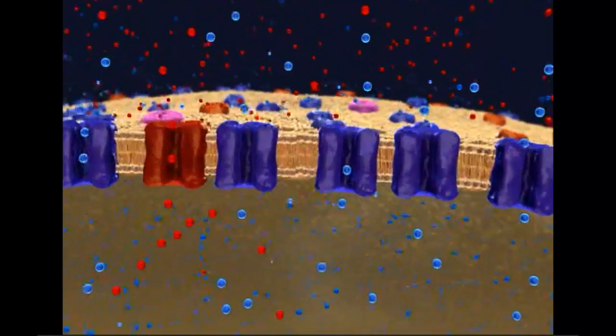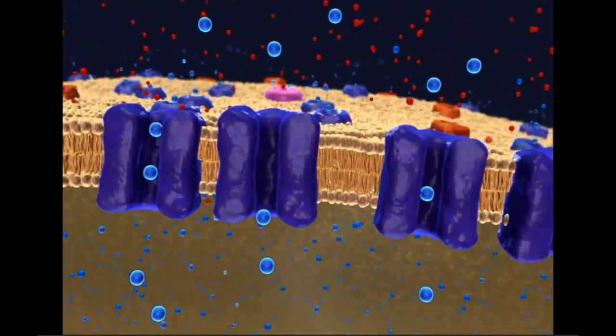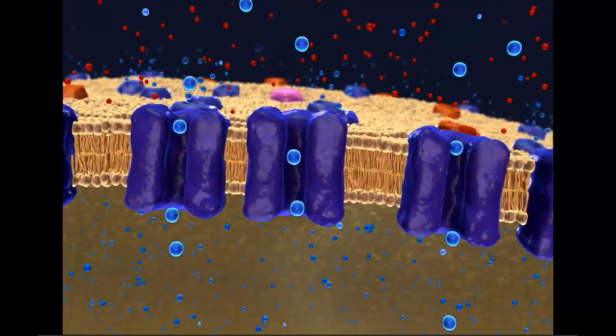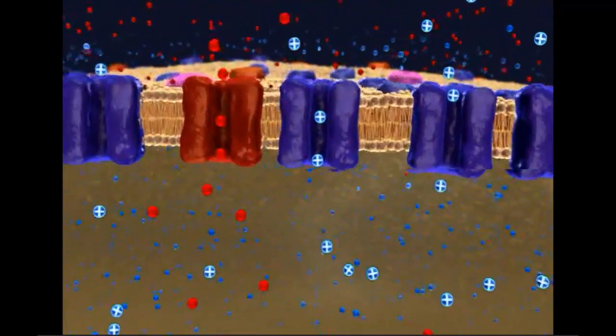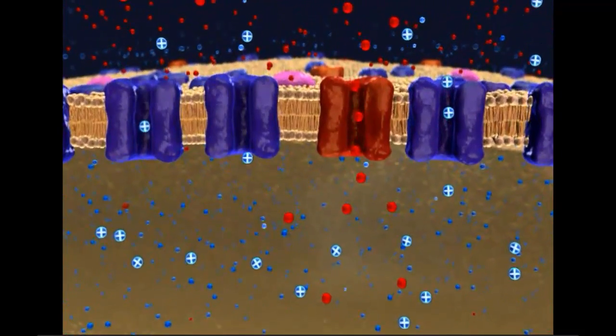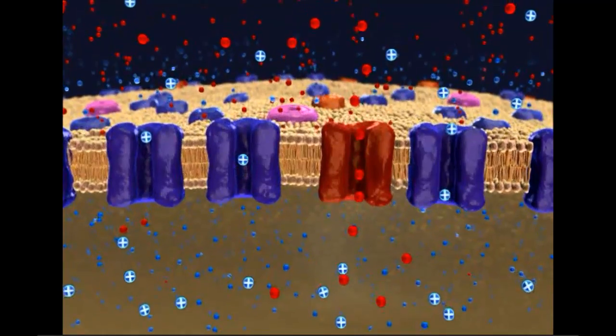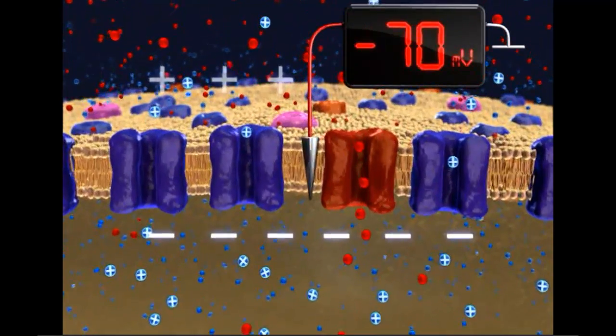Thus, the membrane is much more permeable to potassium ions. As positively charged potassium ions leak out of the neuron, the inside surface of the membrane becomes negatively charged compared to the outside surface.